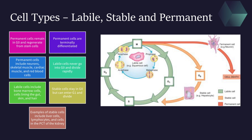Lastly, let's talk about stable or quiescent cells. These cells are kind of in the middle — they like to stay in the G0 phase, similar to a permanent cell, but they can enter G1 and divide if stimulated, similar to a labile cell. Examples of these cells are hepatocytes, so liver cells, lymphocytes, and cells in the proximal convoluted tubule of the kidney.